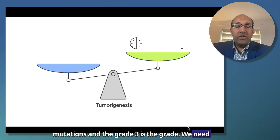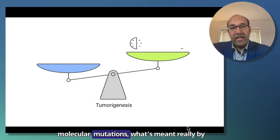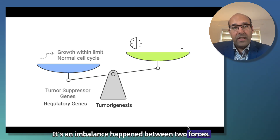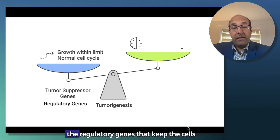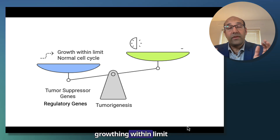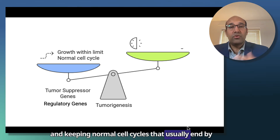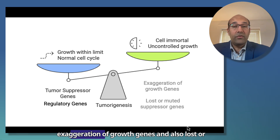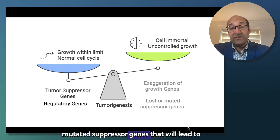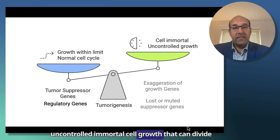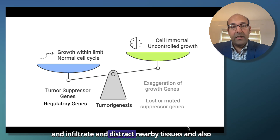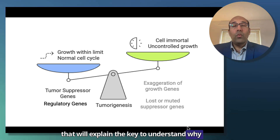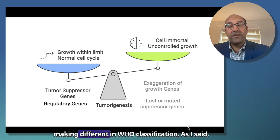We need to keep in mind, before diving into the four main molecular mutations, what is really meant by tumorigenesis. It's an imbalance between two forces. The first force is the tumor suppressor genes and regulatory genes that keep cell growth within limits and maintain normal cell cycles that usually end by apoptosis. In a tumor, there is an upper hand for exaggerated growth genes and lost or mutated suppressor genes, leading to uncontrolled, immortal cell growth that can divide, infiltrate, and destroy nearby tissues, and also metastasize.